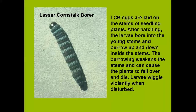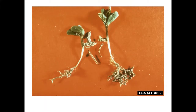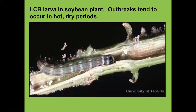Lesser cornstalk borer larvae are going to be a problem in dry weather and sandy soils. They bore up and down the stems of the plants they attack. The burrow weakens the stems and causes the plants to fall over and die, and the larvae wiggle violently when disturbed. They move in and out of plants, going into feeding tubes formed by spinning silk webbing with soil particles attached. During wet weather, they can actually burrow clean through the top of a twelve-inch tall soybean plant and come out the top.